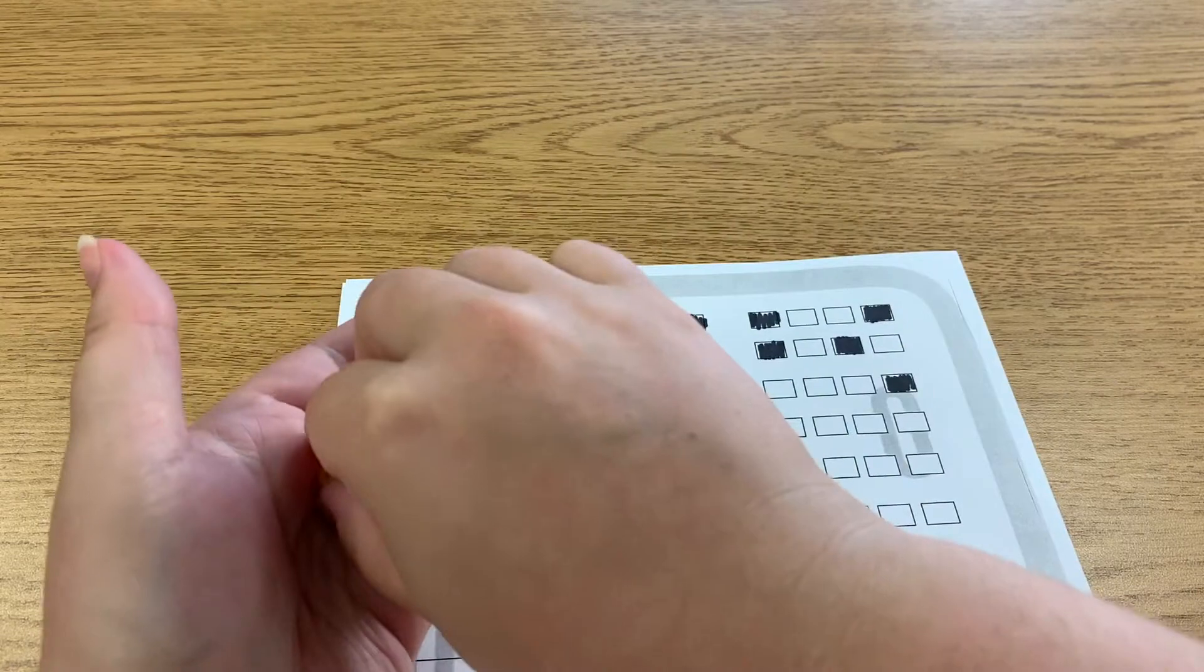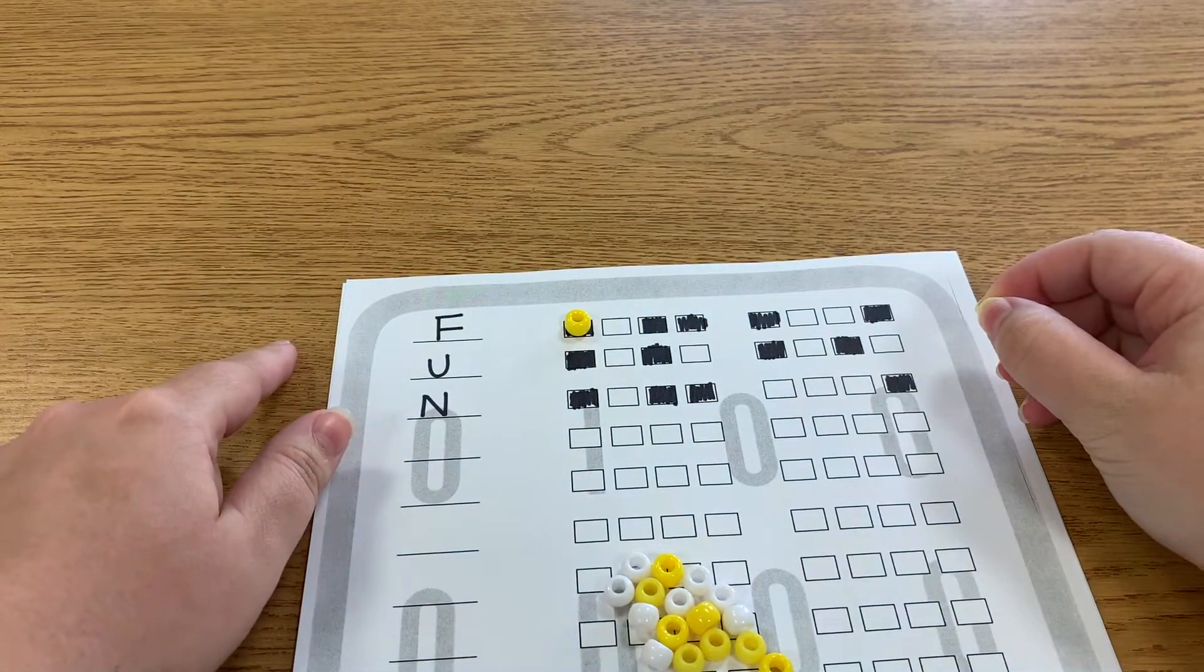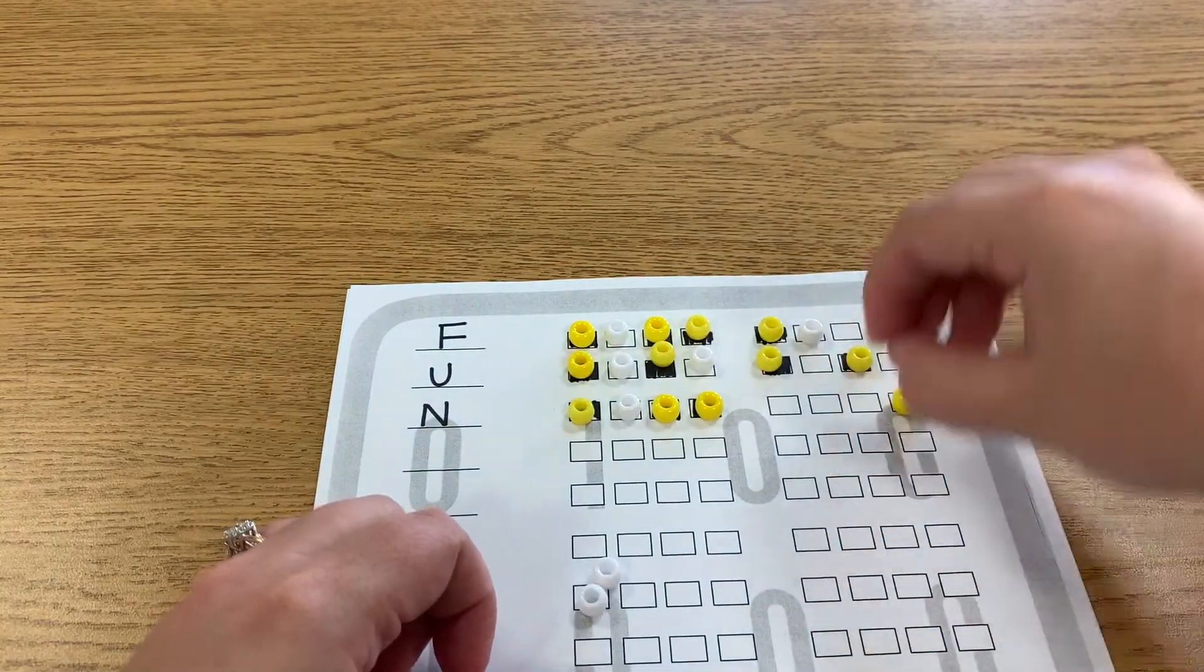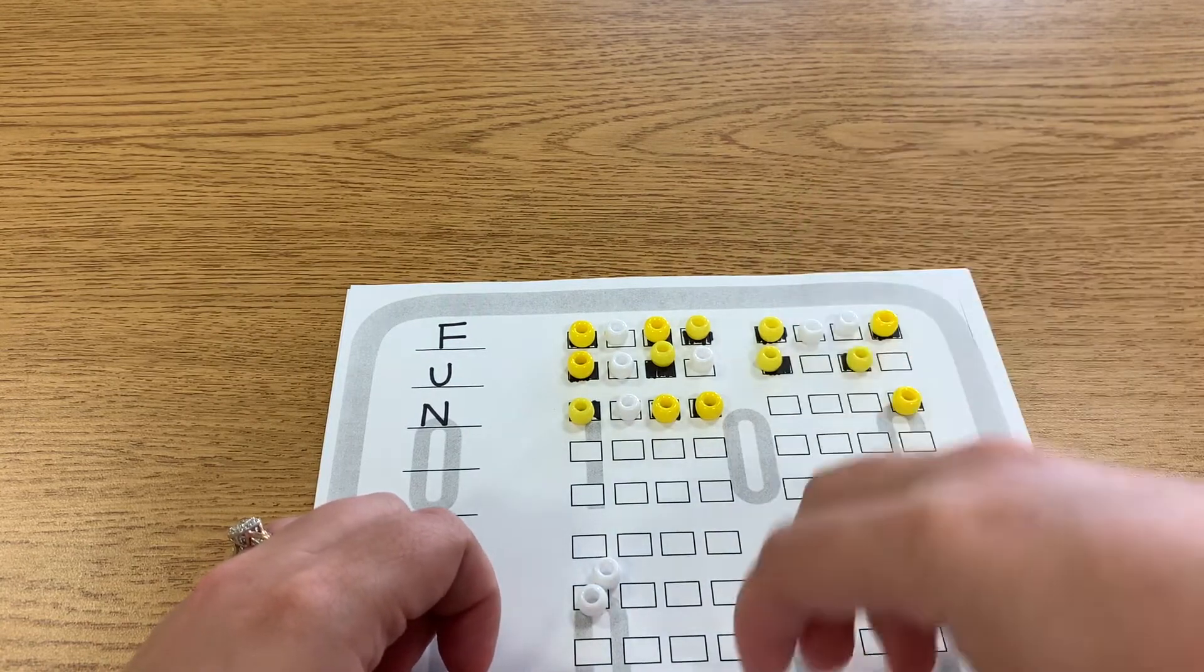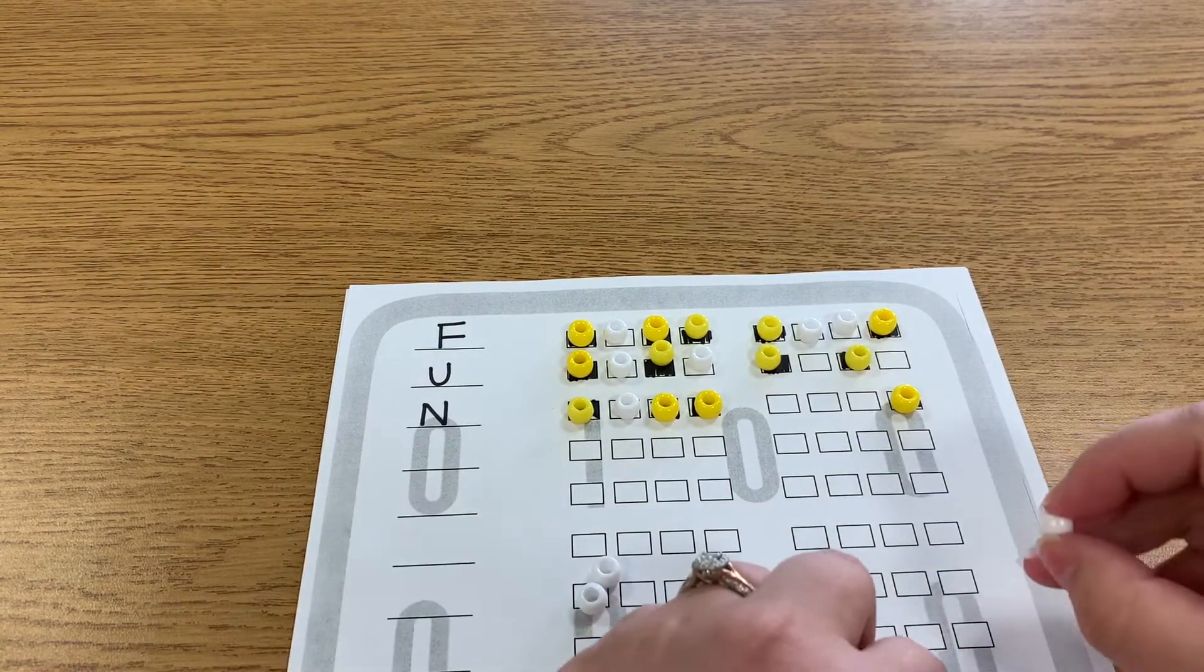I decided that yellow would represent black, and white would represent white. So now I am going to go ahead and organize all of my beads to the corresponding colors.